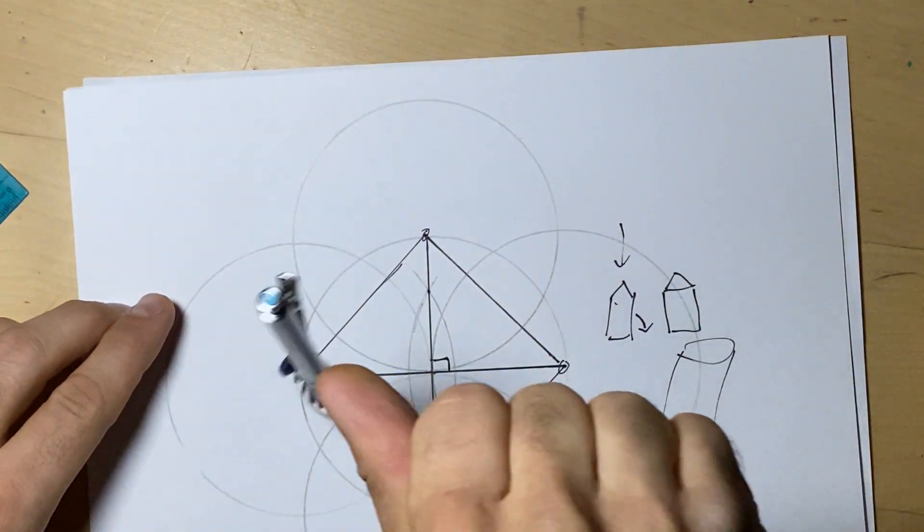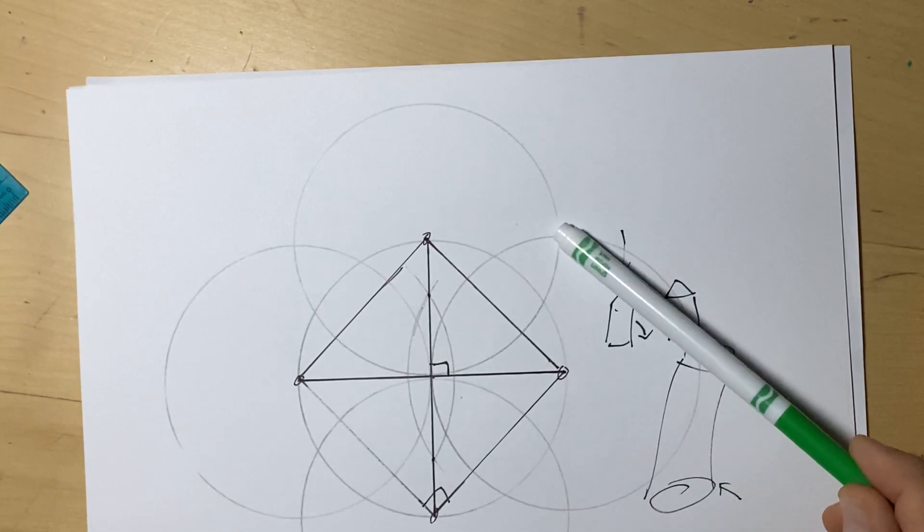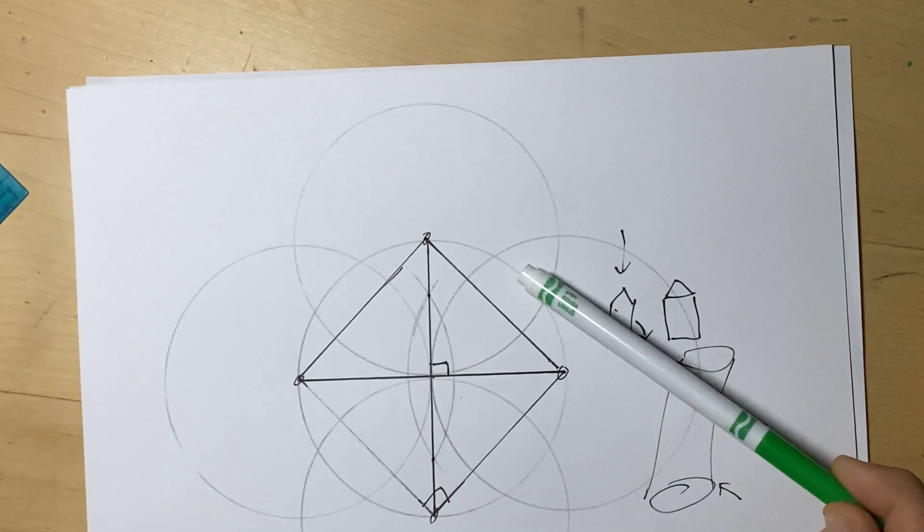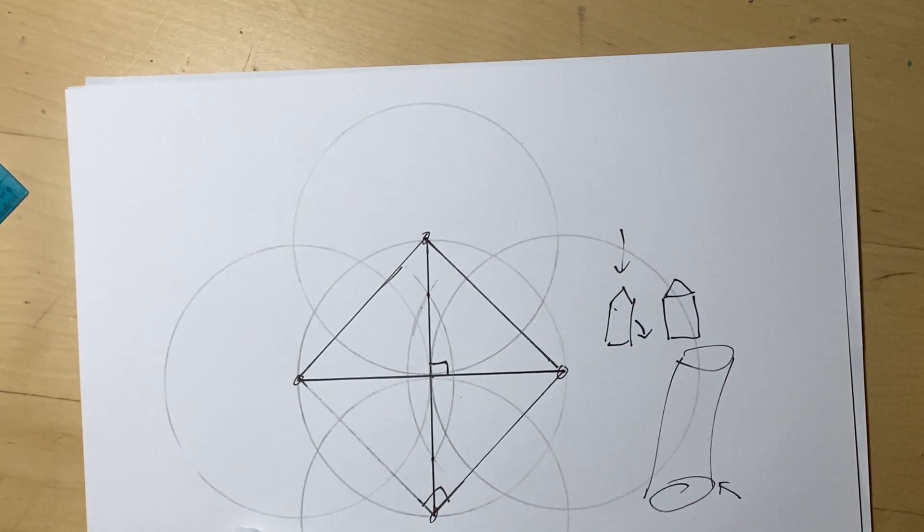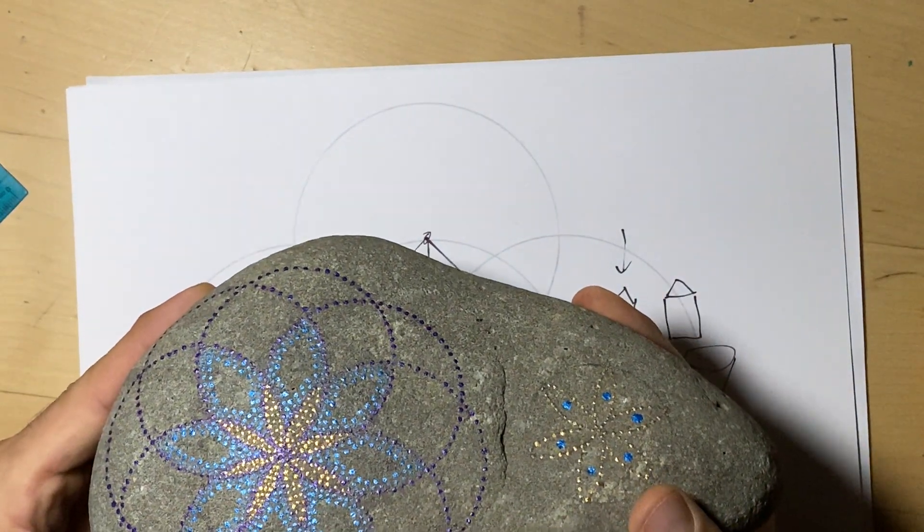This is actually a pretty popular pattern. If we were to now find the middle here, we can draw four more circles and we can make an eight-sided star. I'll make a video for that.